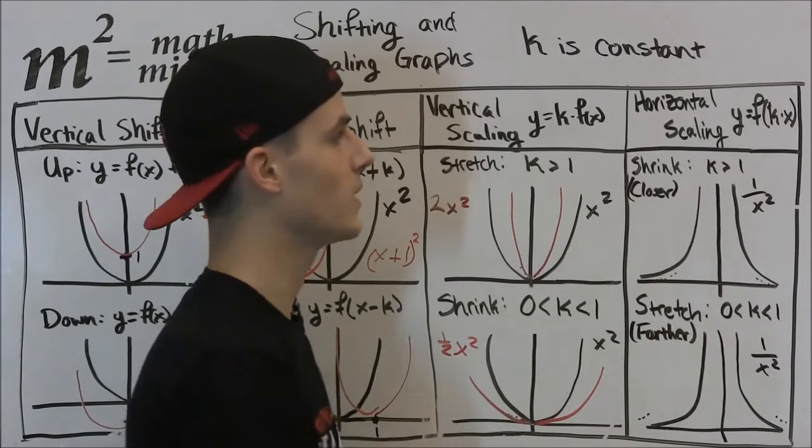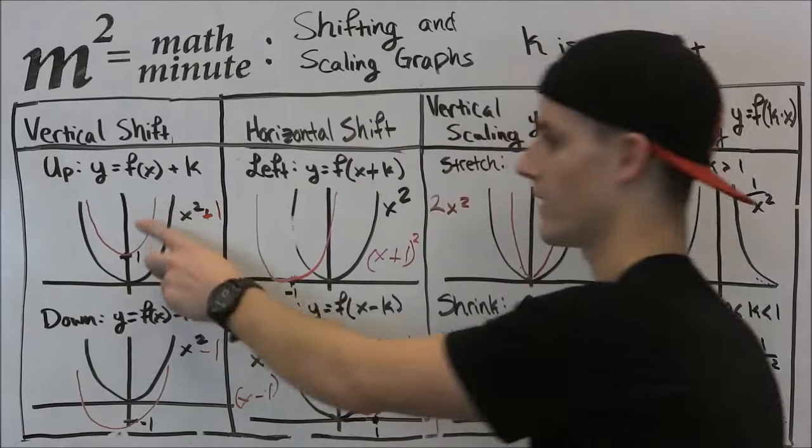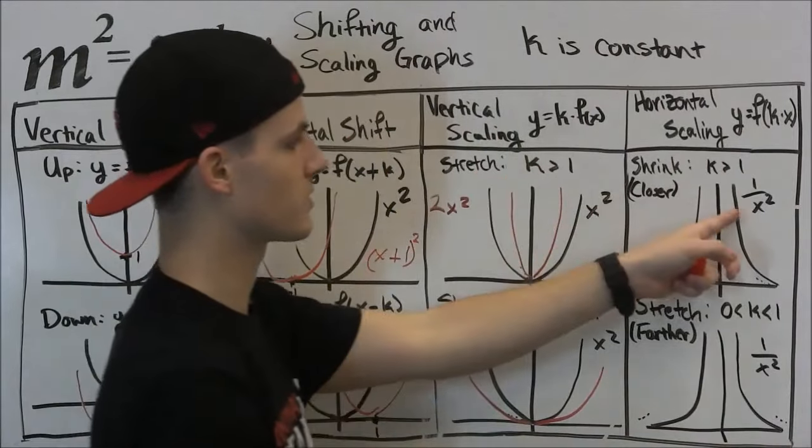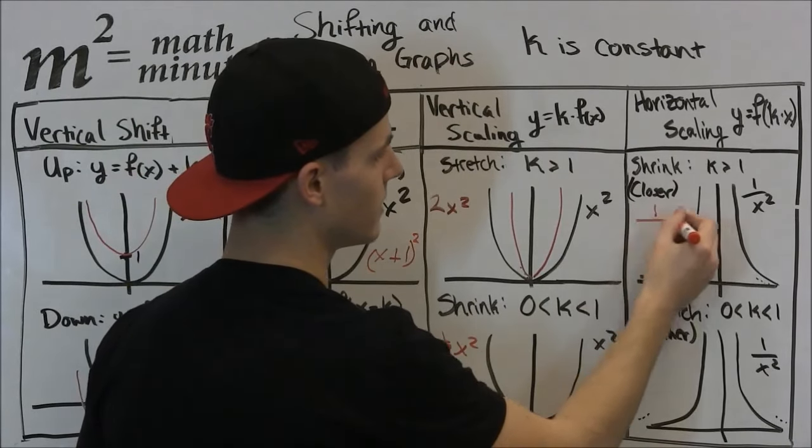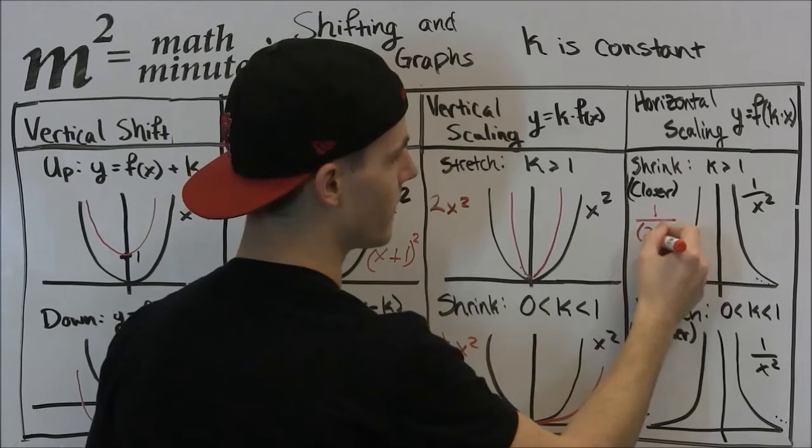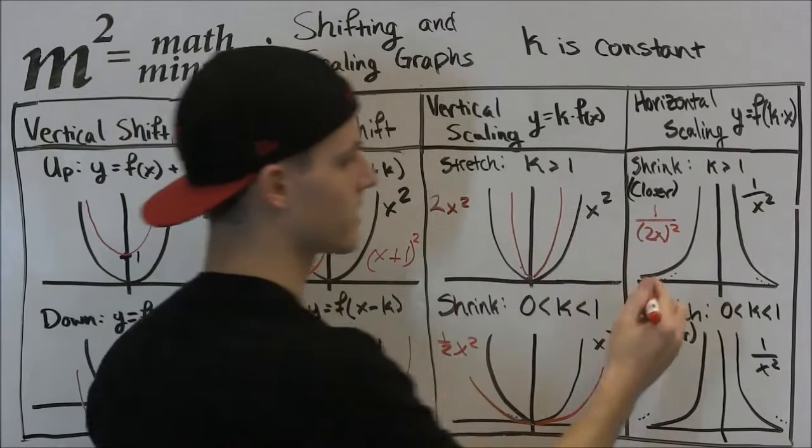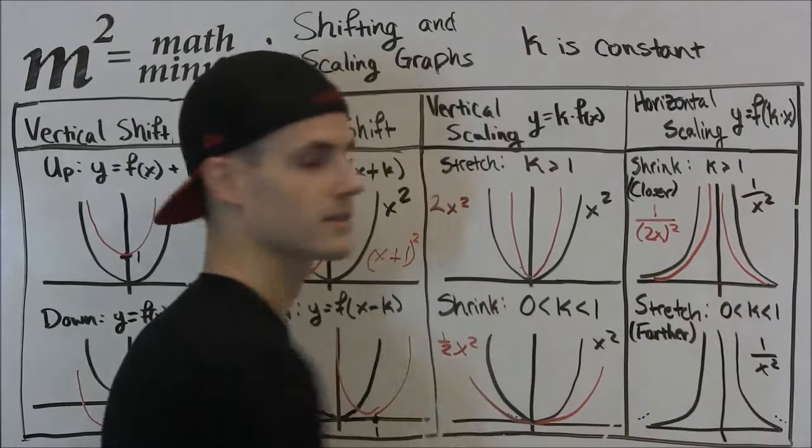If k is greater than 1, and we multiply this on the inside of the function, just like here we had on the outside, and then the inside. This was the outside, and this is going to be the inside. So if we multiply this inside by 2, what's going to happen is this is going to move towards the x-axis. So it's going to be the same graph, but just closer to the x-axis.